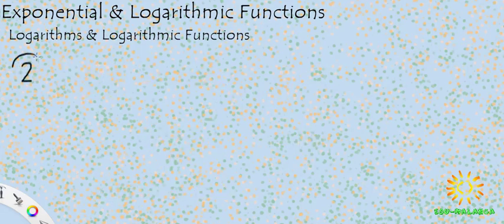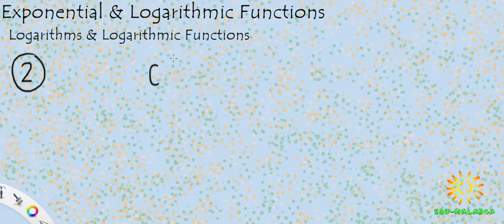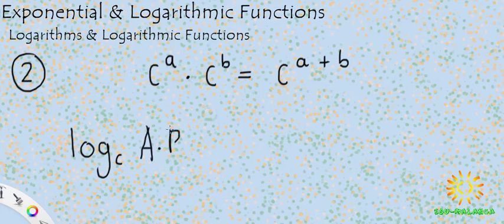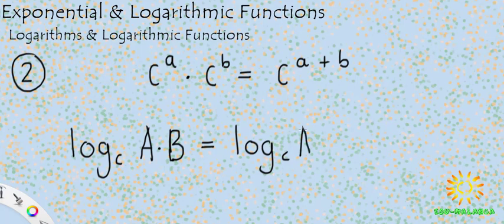The second law of logarithms is closely associated with the product law of exponents. With exponents, when two expressions with the same base multiply — c to the power of a times c to the power of b — we add the exponents to get c to the power of a plus b. As a log function: log base c of (a times b) equals log base c of a plus log base c of b. These two expressions are equal — that's the second law of logs.